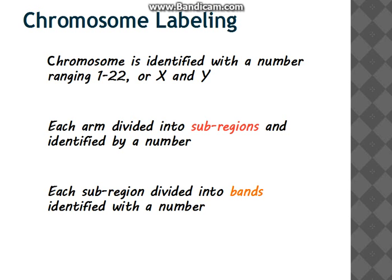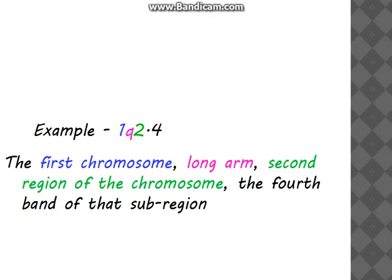Now there is chromosome labeling. To identify a chromosome, we give it a number from 1 to 22, or X and Y. Each arm of the chromosome is divided into subregions, and each subregion is further divided into bands. For example, 1Q2.4 means: 1 is the first chromosome, Q is the long arm, 2 is the second subregion, and 4 is the fourth band of that subregion.